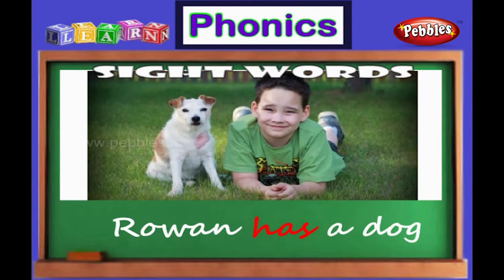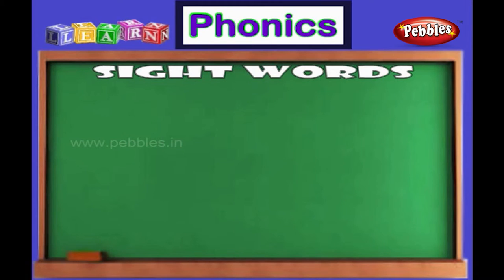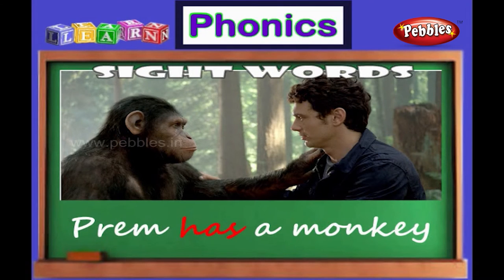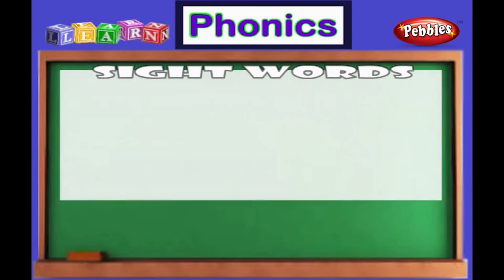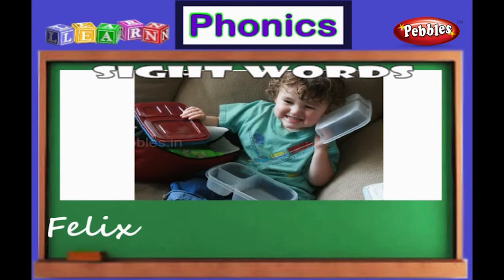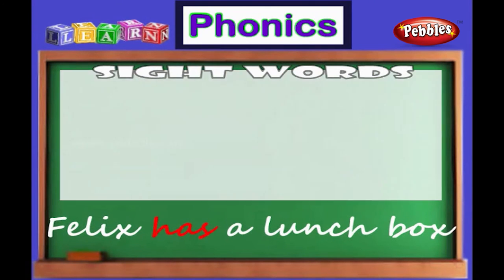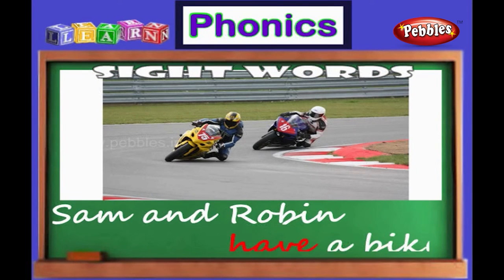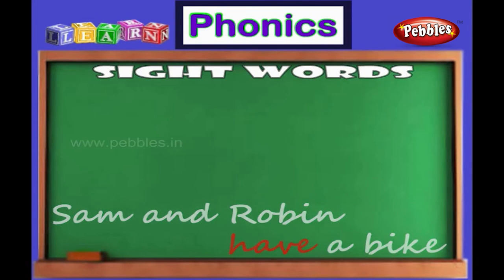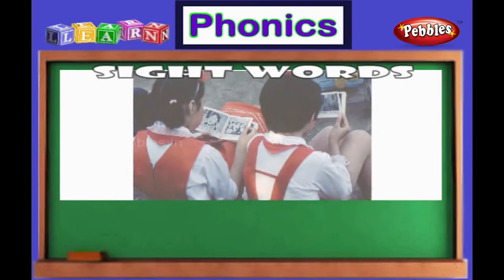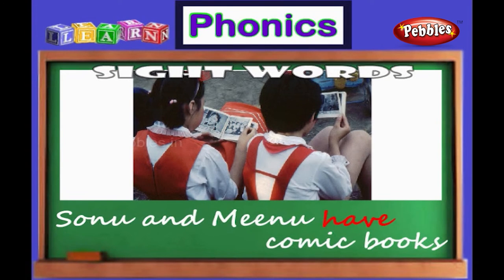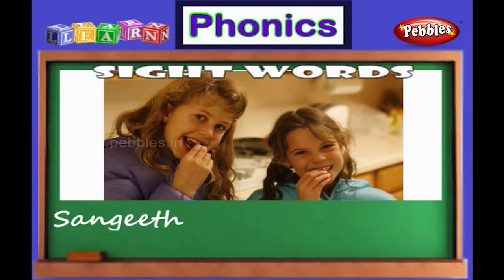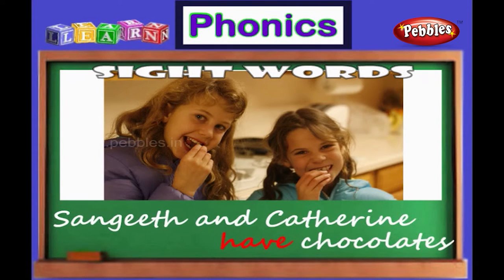Rowan has a dog. Prem has a monkey. Felix has a lunchbox. Sam and Robin have a bike. Sonu and Meenu have comic books. Sangeet and Catherine have chocolates.